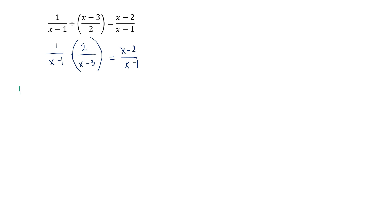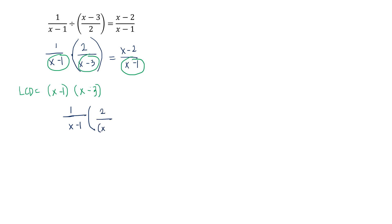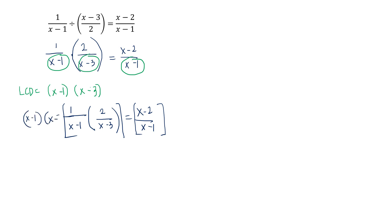To find the LCD: since none of the denominators can be factored further, the LCD is their product. However, since (x minus 1) is common to both sides, we consider it once. So the LCD equals (x minus 1) times (x minus 3). We multiply both sides of the rational equation by this LCD.